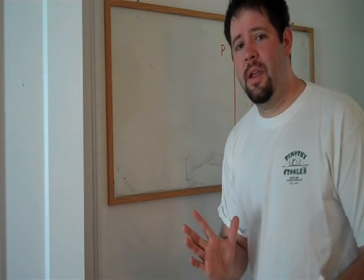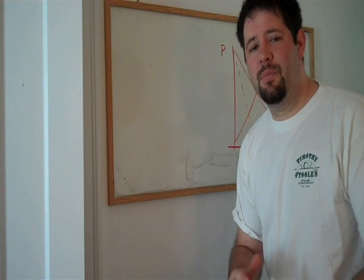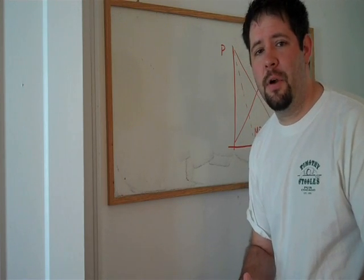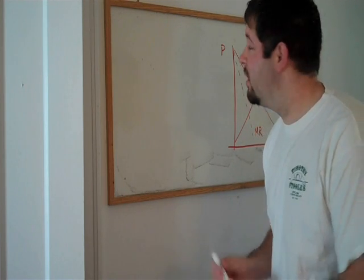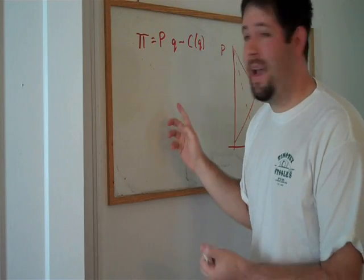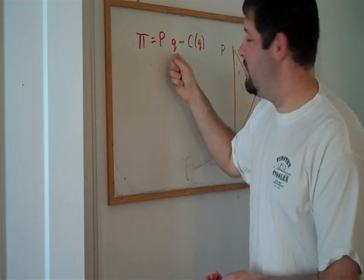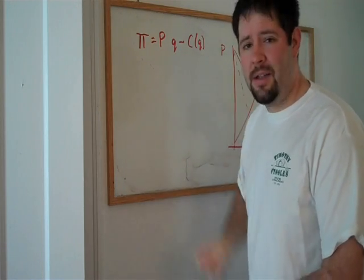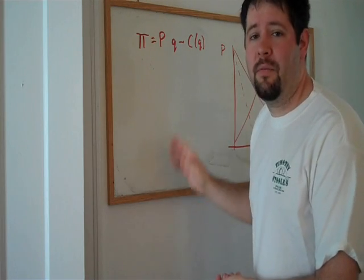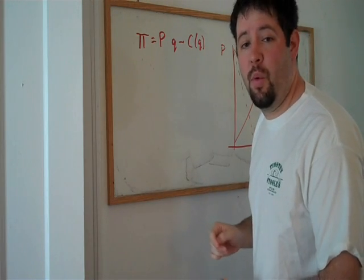Now, a monopoly just maximizes profit, just like a competitive firm. So what does profit look like? Well, profit is just revenue minus cost. Price times quantity is our revenue, and then we have the cost function, and we subtract that off, and it's a function of whatever your quantity is.